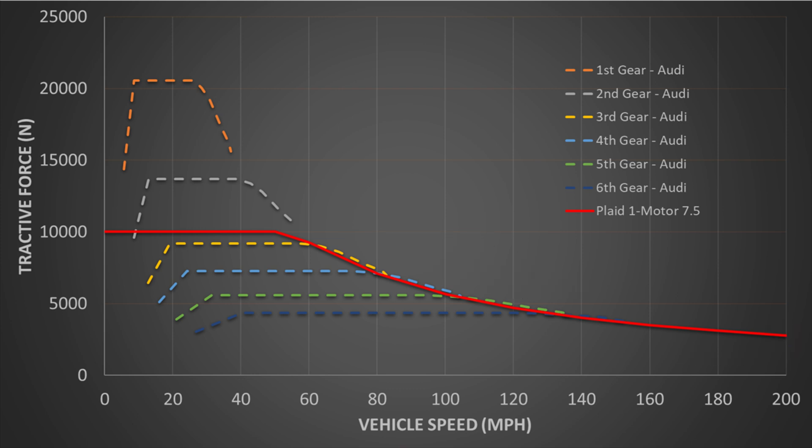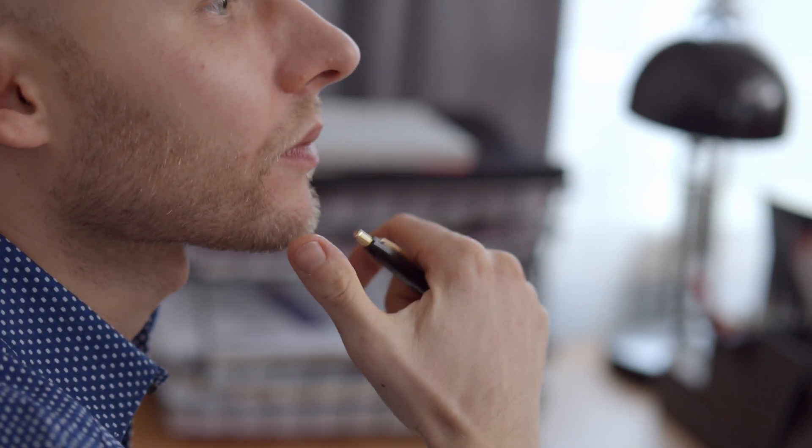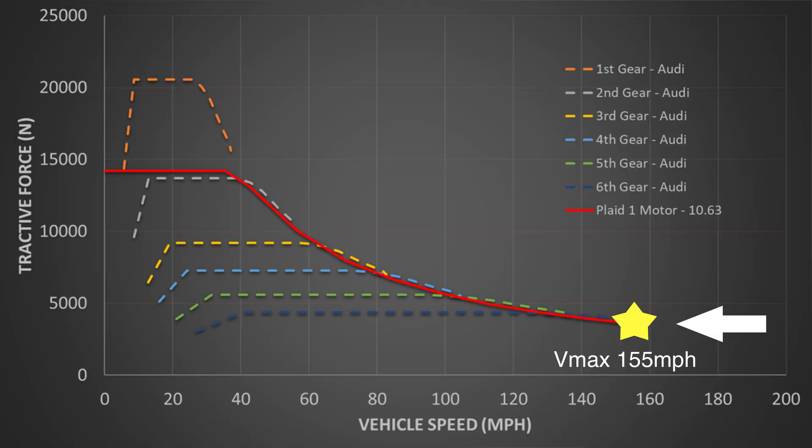With this setup, it would be roughly equivalent to the performance of the Audi starting in third gear, but continues well past the Audi's top speed. But what if we could change the gear ratio with the Plaid motor to achieve the same 155 mile per hour V-Max?